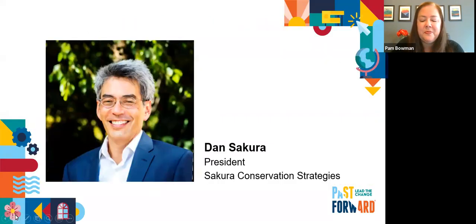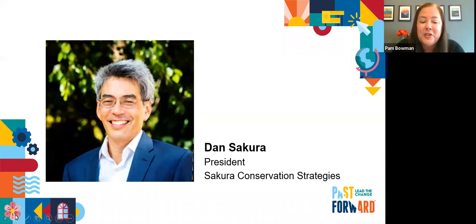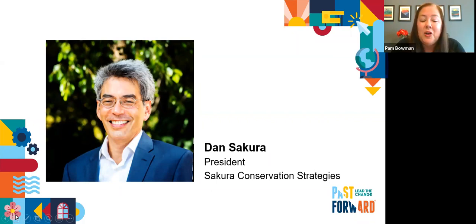It's now my pleasure to introduce Dan Sakura, who's going to talk about two key preservation issues, including Minidoka legislation. Dan is the principal at Sakura Conservation Strategies, with over 25 years of experience collaborating with partners nationwide to permanently protect nationally significant properties, including senior positions on Capitol Hill and in previous administrations. His work includes successfully completing projects to preserve Japanese American confinement sites, African American civil rights sites, national parks, and public lands via administrative actions, legislation, and other work.